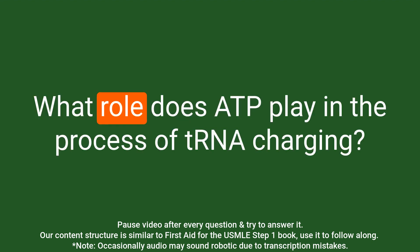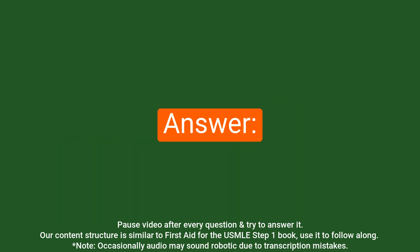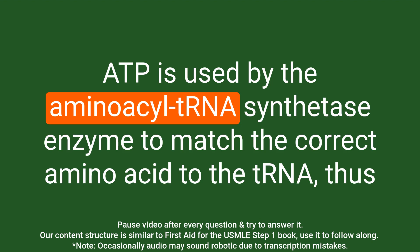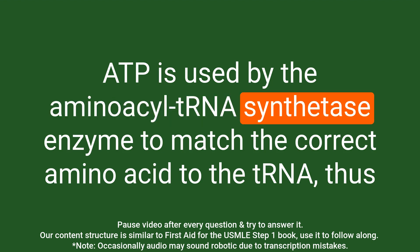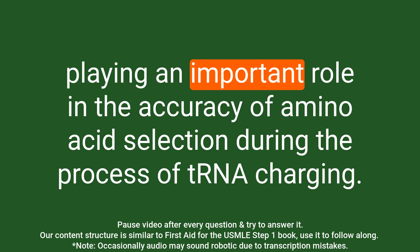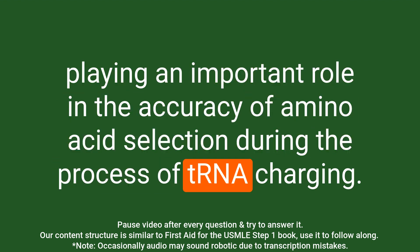Question: What role does ATP play in the process of tRNA charging? Answer: ATP is used by the aminoacyl-tRNA synthetase enzyme to match the correct amino acid to the tRNA, thus playing an important role in the accuracy of amino acid selection during tRNA charging.